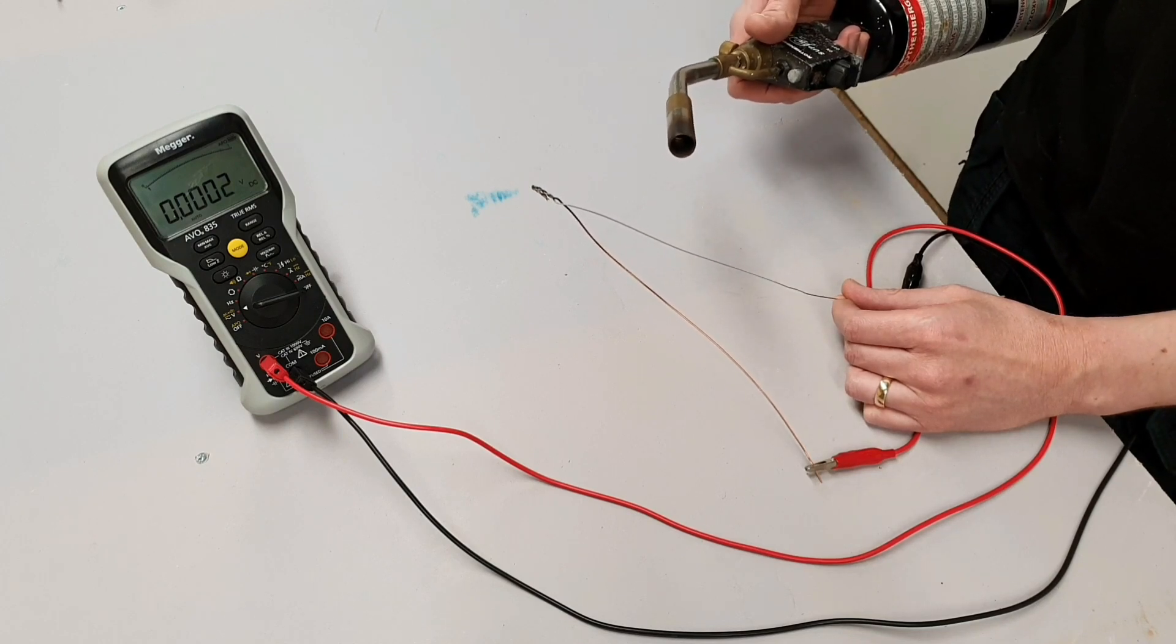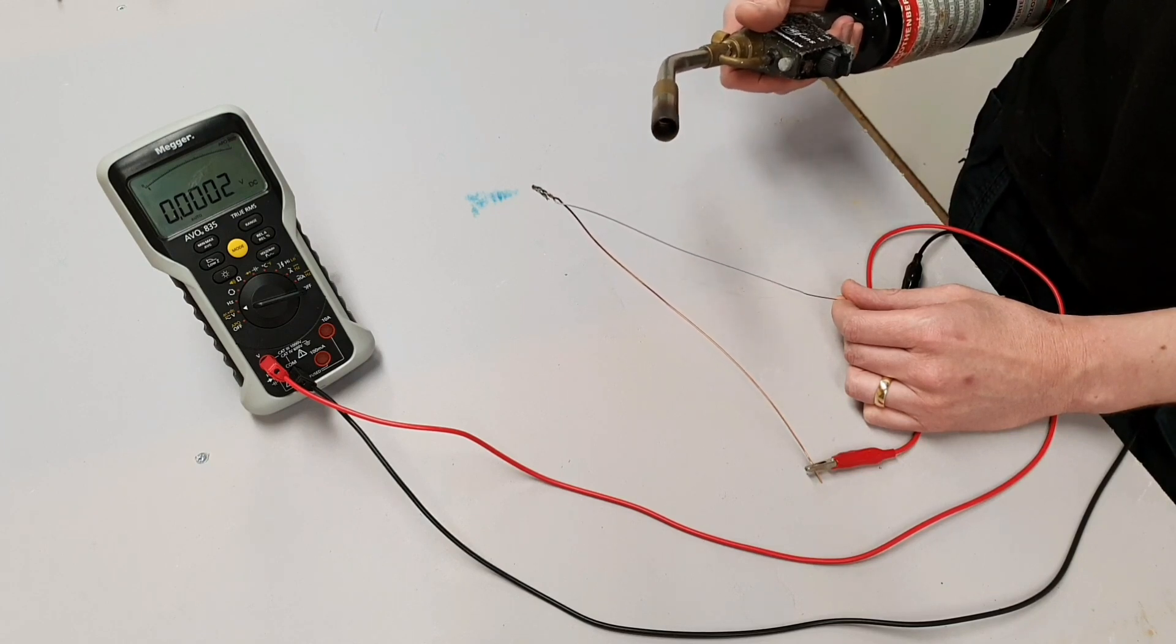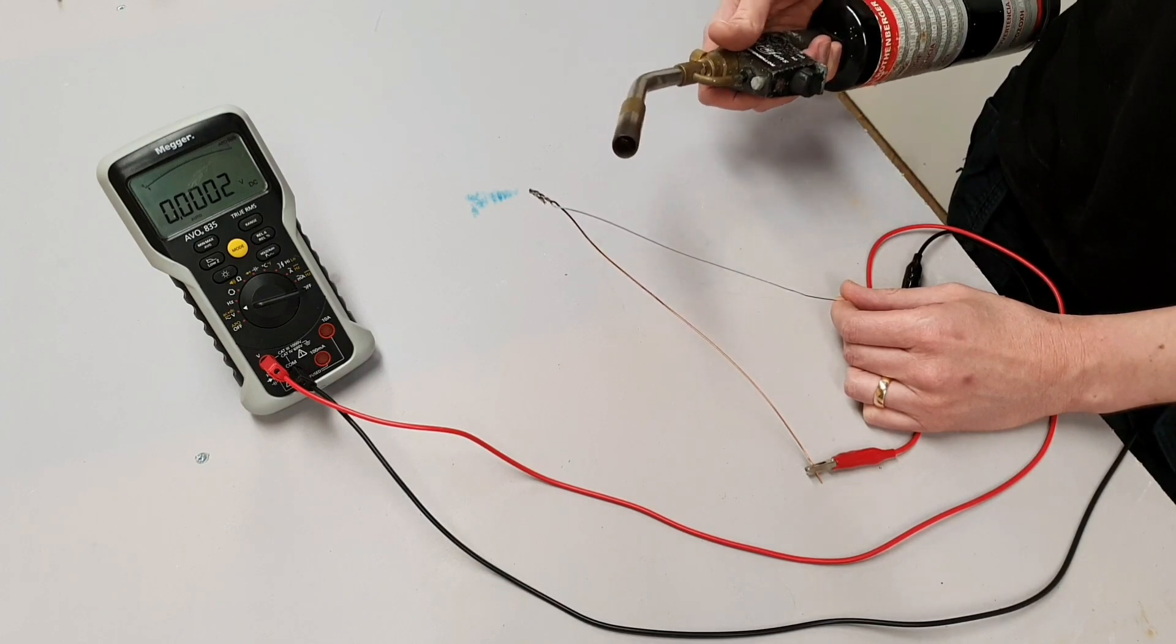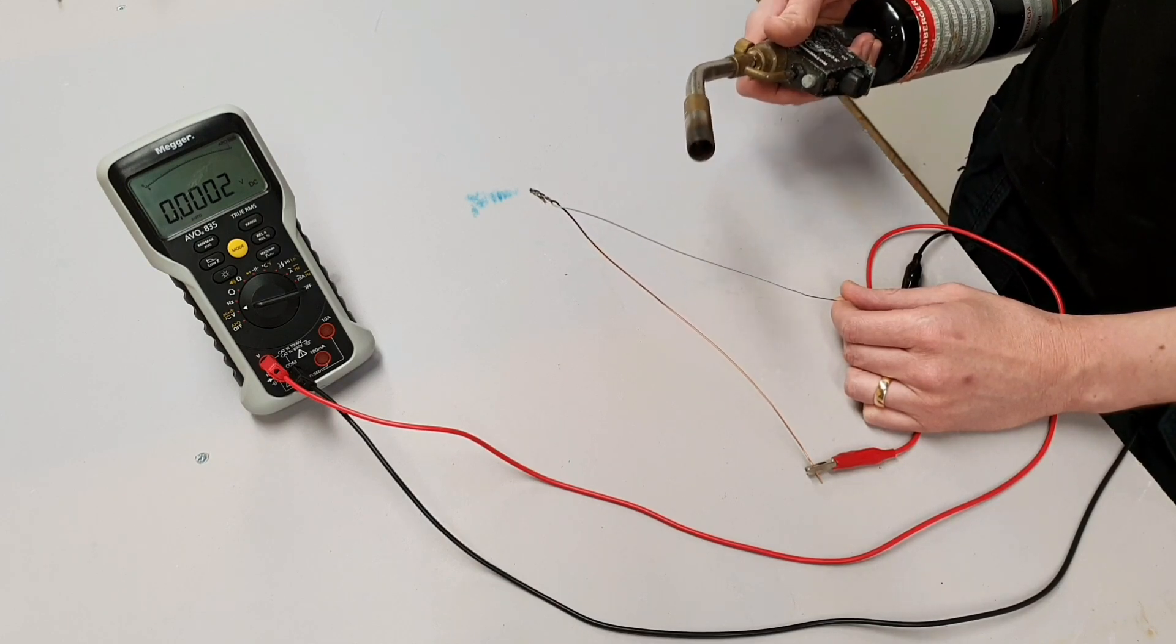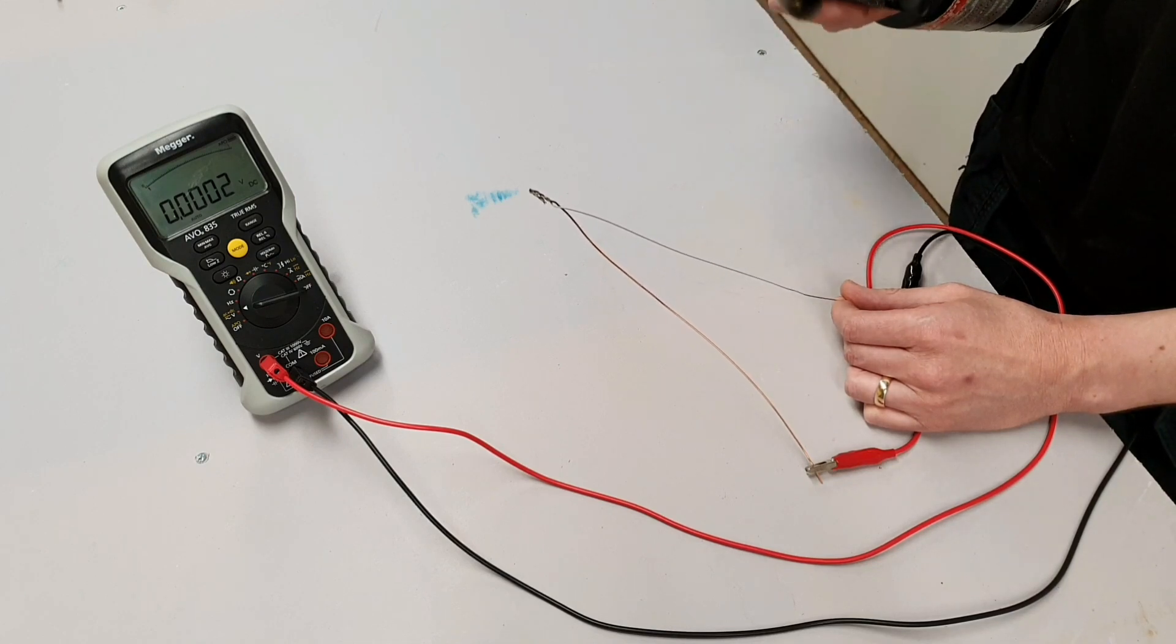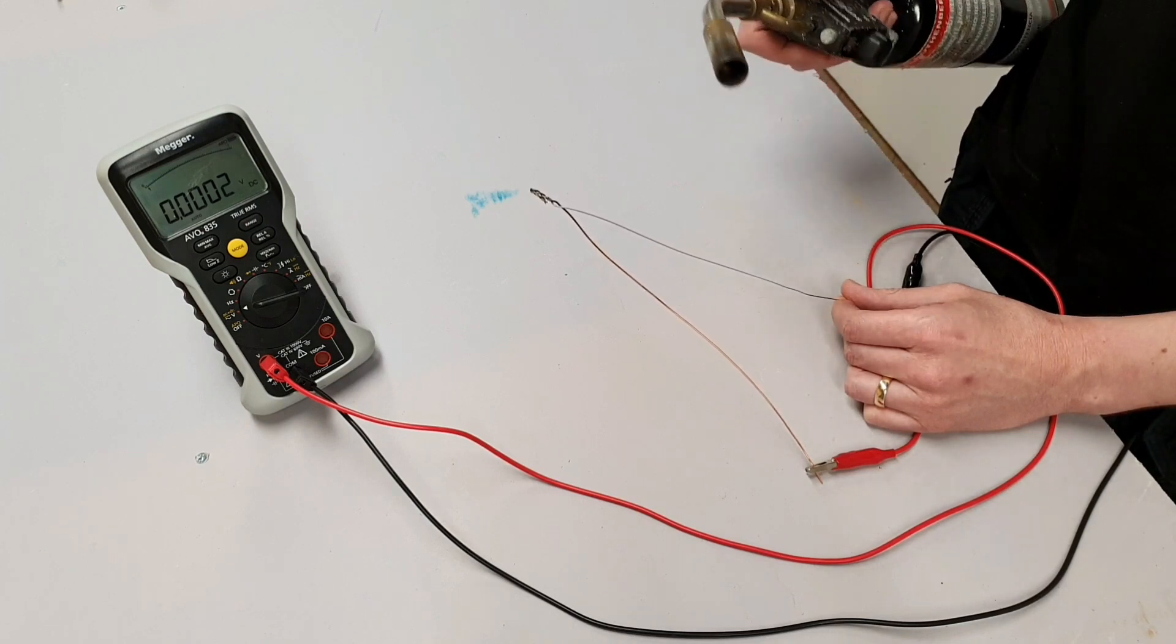Now the mistake that a lot of people make at this point is they think about big power generating equipment such as power stations and things like that, and they think, well, we burn things like coal and oil and gas and we turn that into electricity. However, when we burn those substances and make electricity, we are not using the thermal effect of electricity.